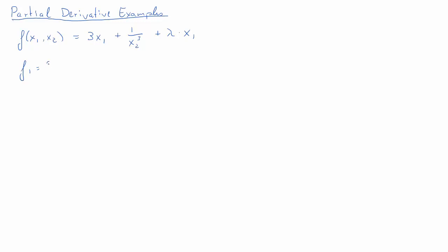Let's calculate the first partial derivative f1, which can also be expressed as delta f over delta x1. What we need to note is that if we want to calculate a partial derivative with respect to x1, x1 is the only variable we are treating as a variable. Everything else in our function is treated as a constant.